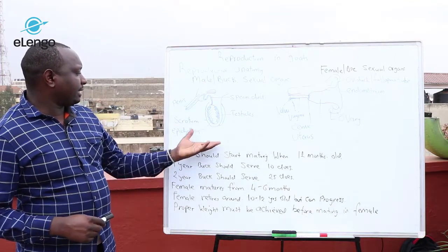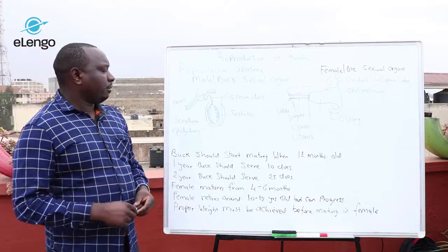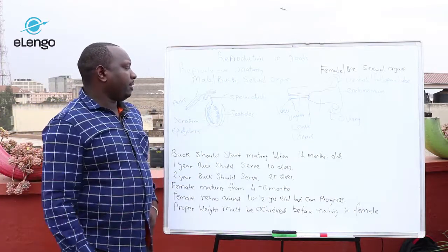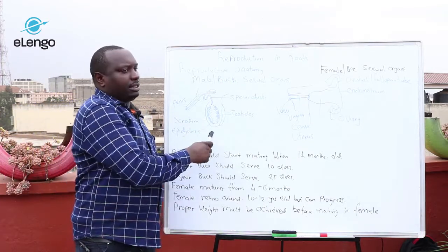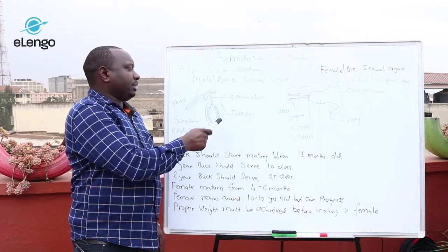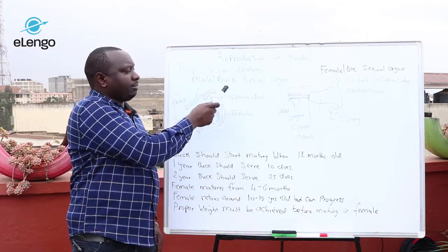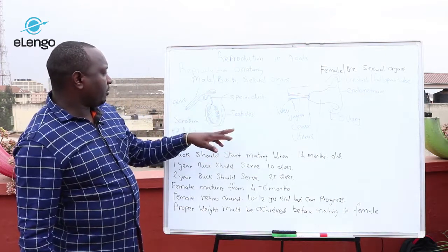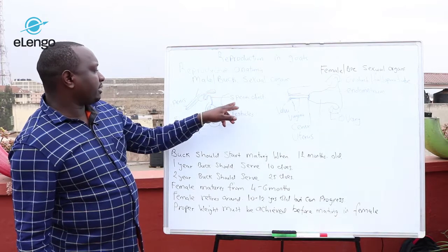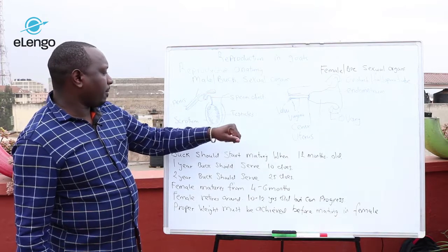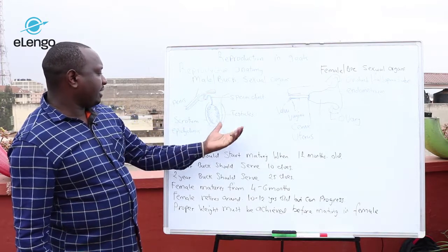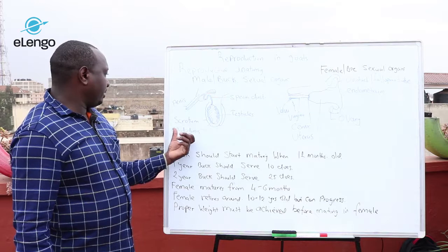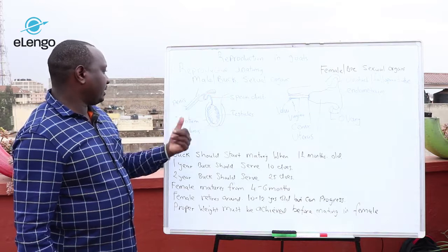In our first pictogram, we have the male organ and we have some parts which are indicated. We have the vas deferens which is a sperm duct, we have the testicles, the epididymis, and the penis.